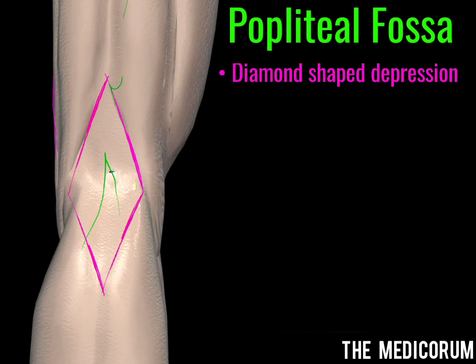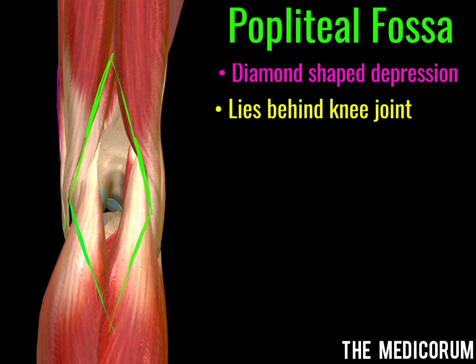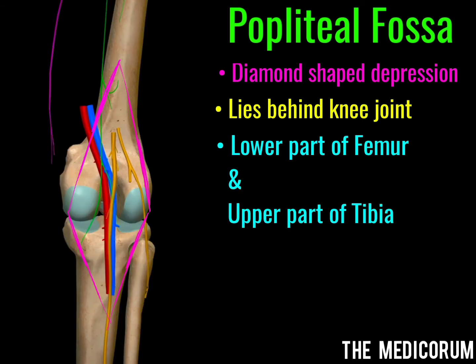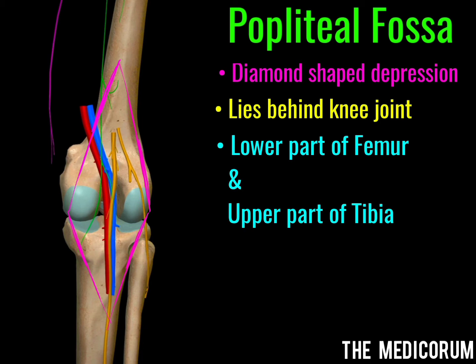As you can see in the figure, there is a small triangular depression on the back of the knee joint, and this triangular depression is known as the popliteal fossa. The location of the popliteal fossa is on the lower part of the femur and the upper part of the tibia. Note that the fibula is not included.